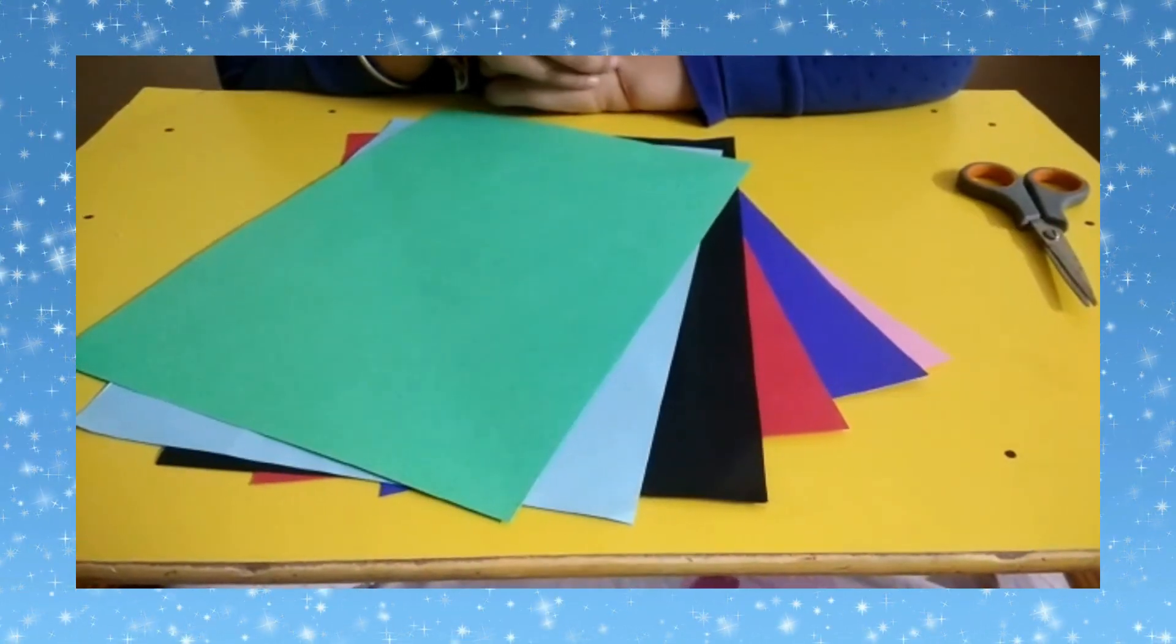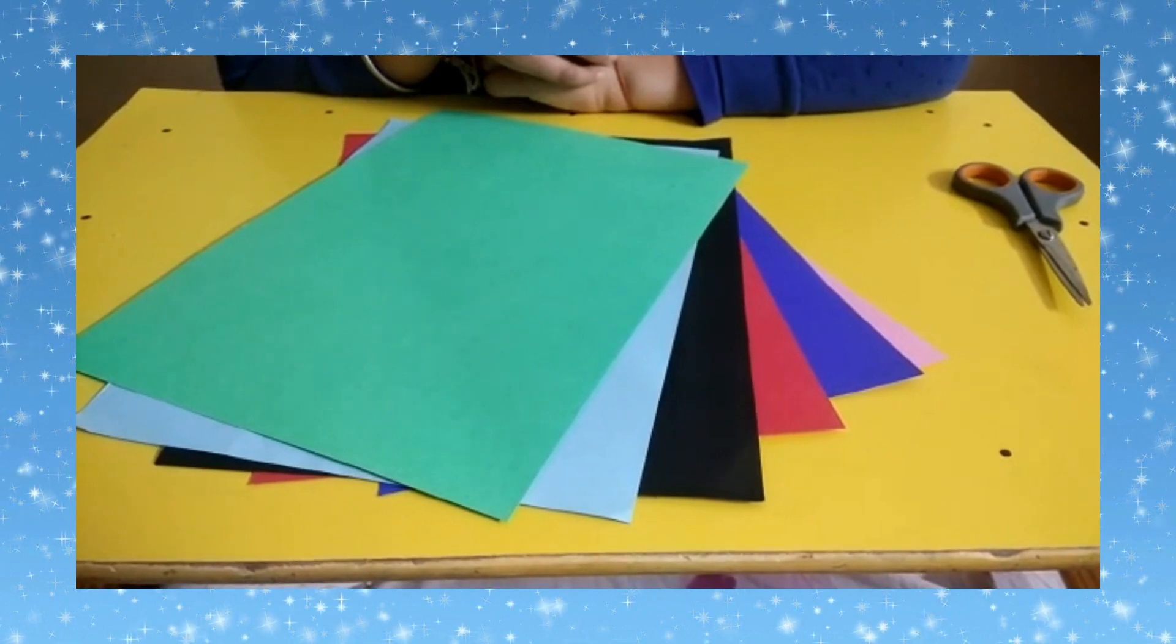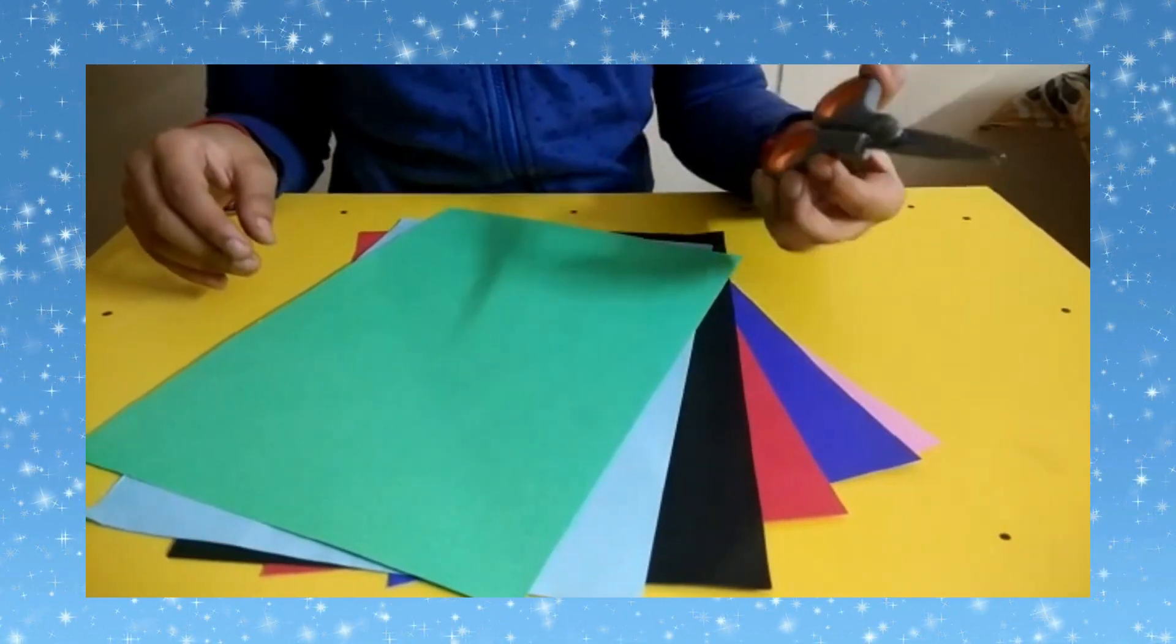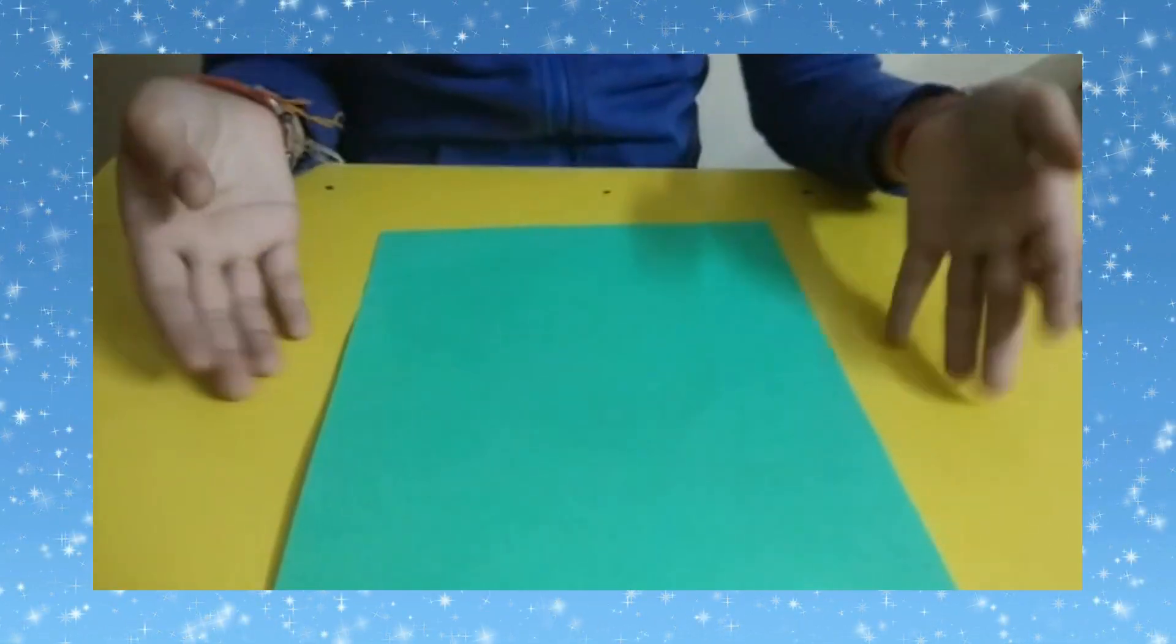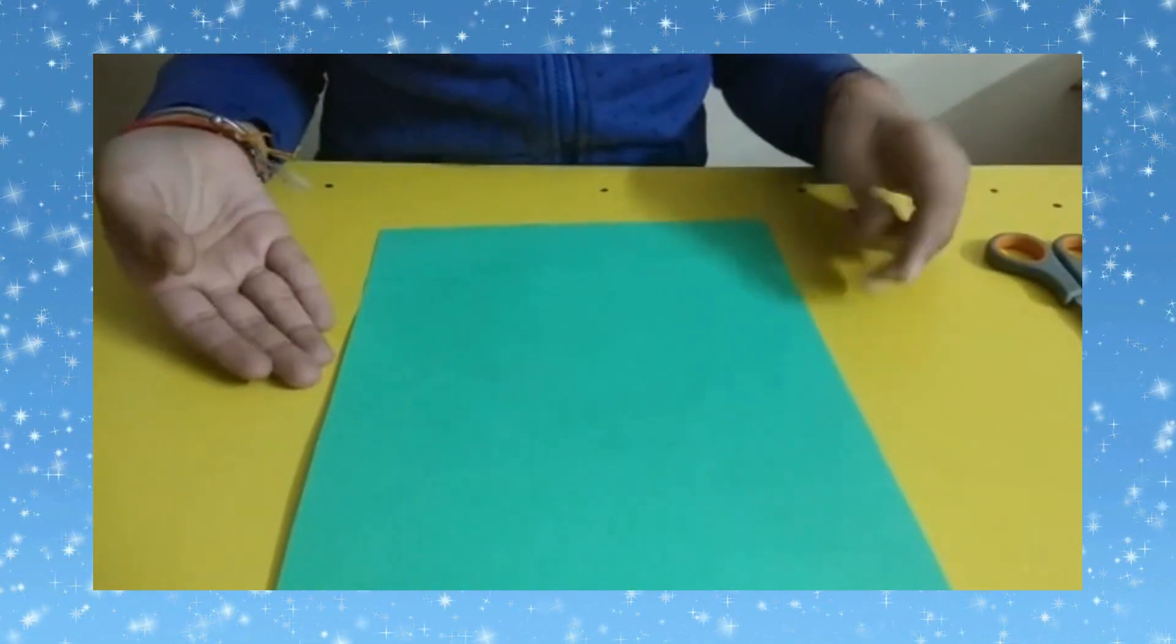Hello everyone! Today I am telling about how to make a paper cube. You need different A4 size colored sheets and a scissor. We need to cut this sheet into a square.